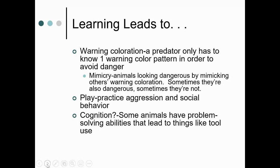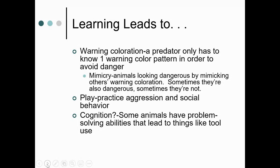Learning also leads to the evolution of warning coloration. A dog just has to bite one small, stripy, stingy thing once to learn to avoid everything that looks small and stripy. This also leads to mimicry, where many stinging insects look similar so a predator doesn't have to sample every one to learn they're all bad. Sometimes the mimicry is a lie — some things look stripy and stingy even though they have no stinger.